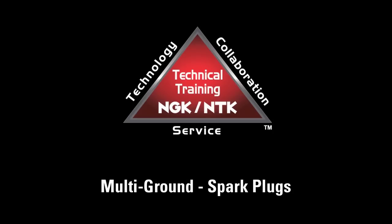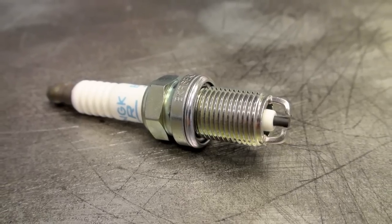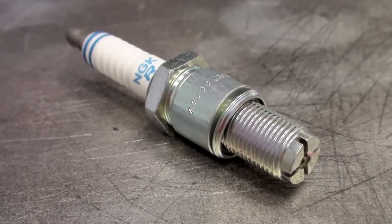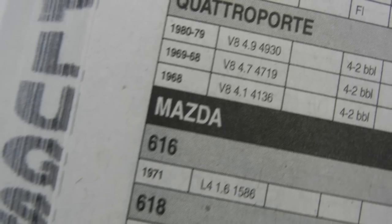One of the most misunderstood spark plug types is the multiple ground electrode spark plug. This spark plug design has been used as original equipment by automobile manufacturers since the 1970s, first appearing in Mazda rotary engines.